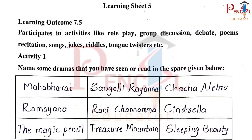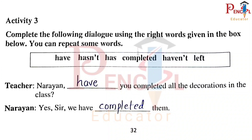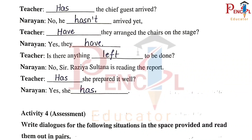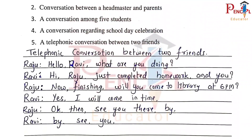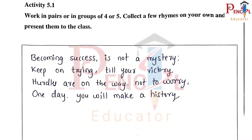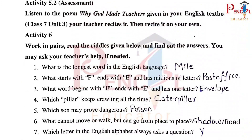Learning Sheet 5, Activity 1, Activity 3 — Have, Completed, Has, Hasn't, Have, Have, Left, Has, Has. Telephonic Conversation Between Two Friends. Activity 5.1, Activity 6.